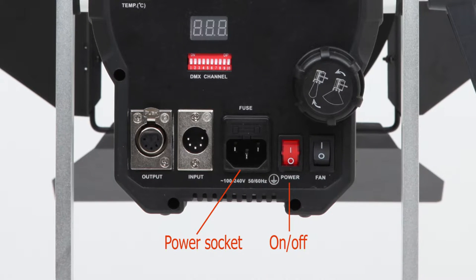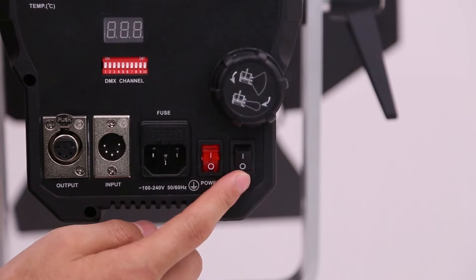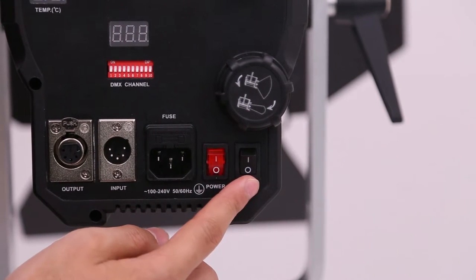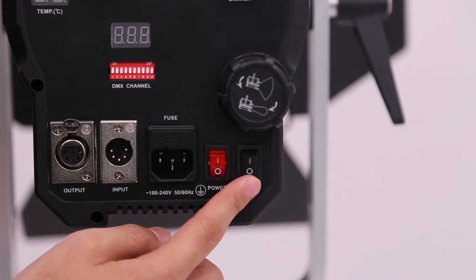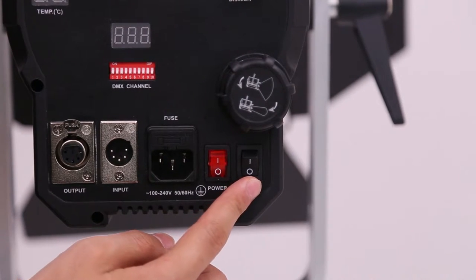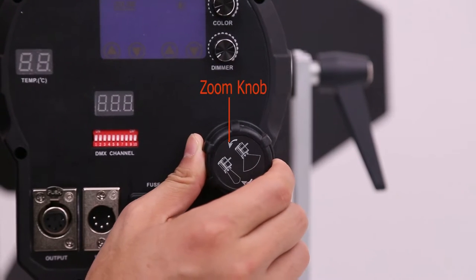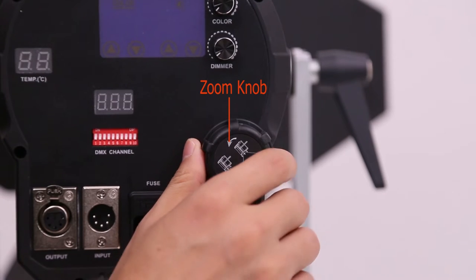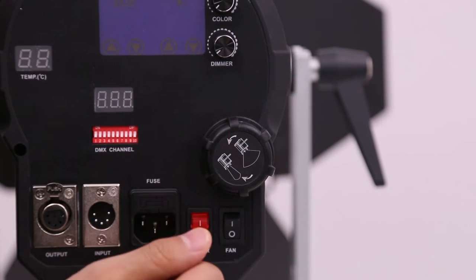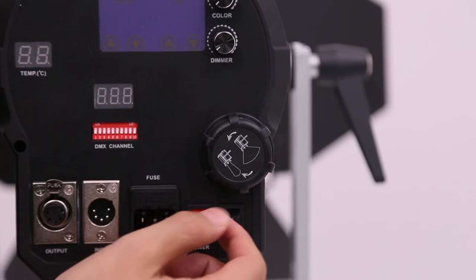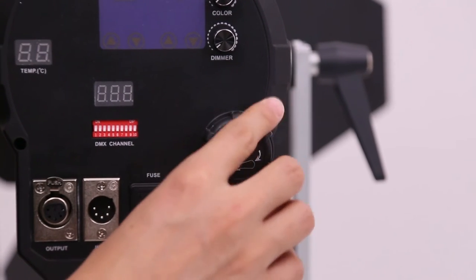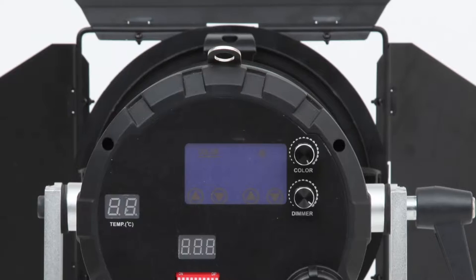Next I'll introduce the control panel. First, this is the power cable socket, next to it is the main power switch. Next to it is the protection switch - when this switch is opened upward, power automatically drops to 50%. This round one is the focus button. When we rotate clockwise it concentrates the light, counterclockwise diffuses the light.